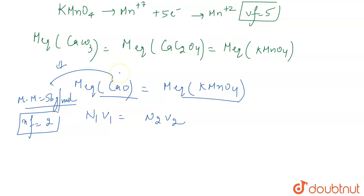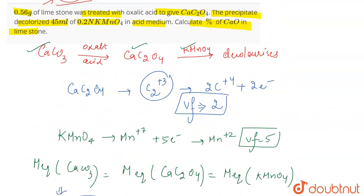So normality will be the given weight divided by the equivalent weight, which is 56 divided by the n-factor (which is 2), times the volume, which we will consider as 1000 ml. The normality of KMnO4 is given as 0.2 and volume is 45 ml.